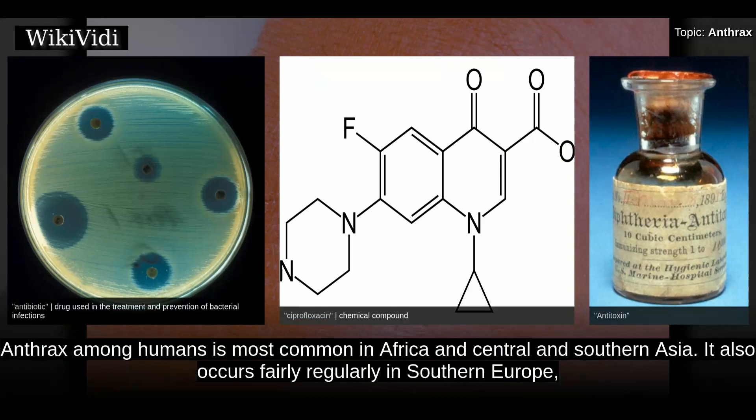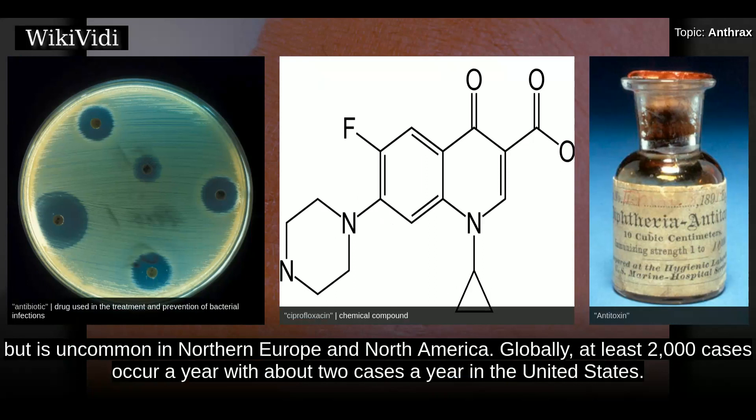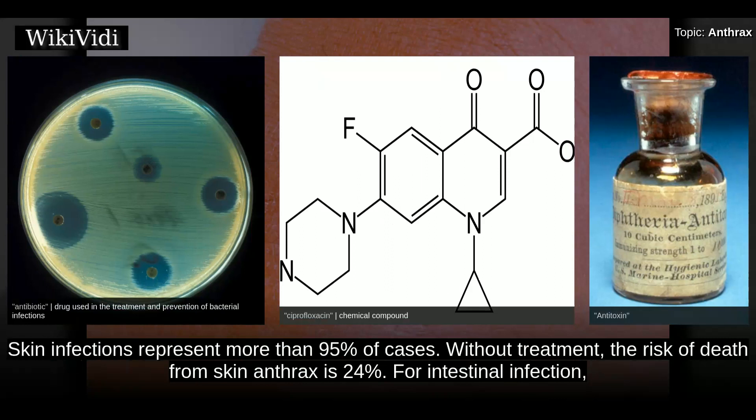Anthrax among humans is most common in Africa and Central and Southern Asia. It also occurs fairly regularly in Southern Europe, but is uncommon in Northern Europe and North America. Globally, at least 2,000 cases occur a year, with about 2 cases a year in the United States. Skin infections represent more than 95% of cases. Without treatment, the risk of death from skin anthrax is 24%.